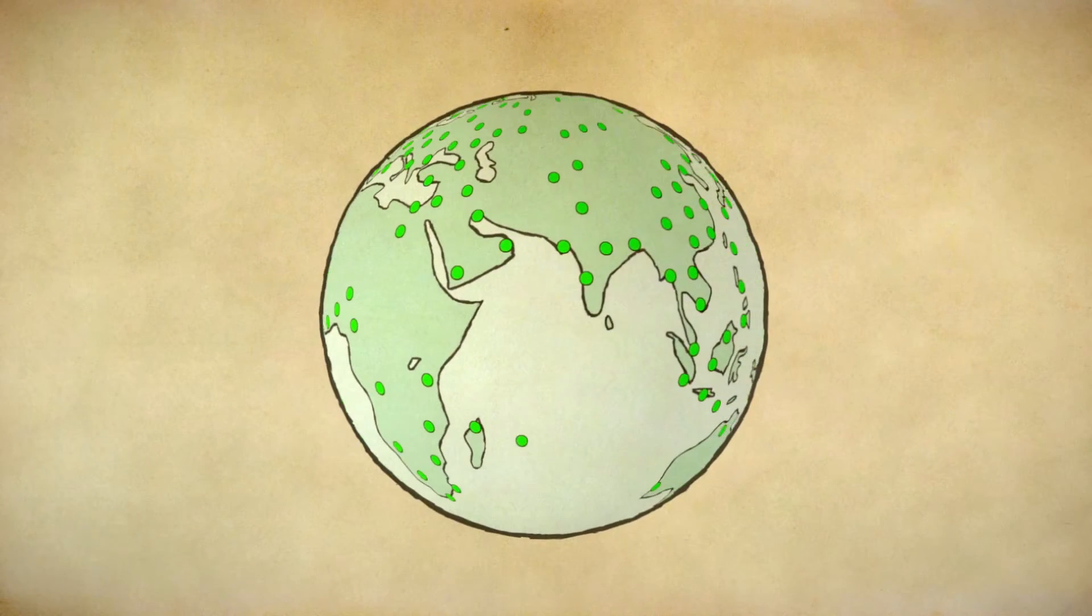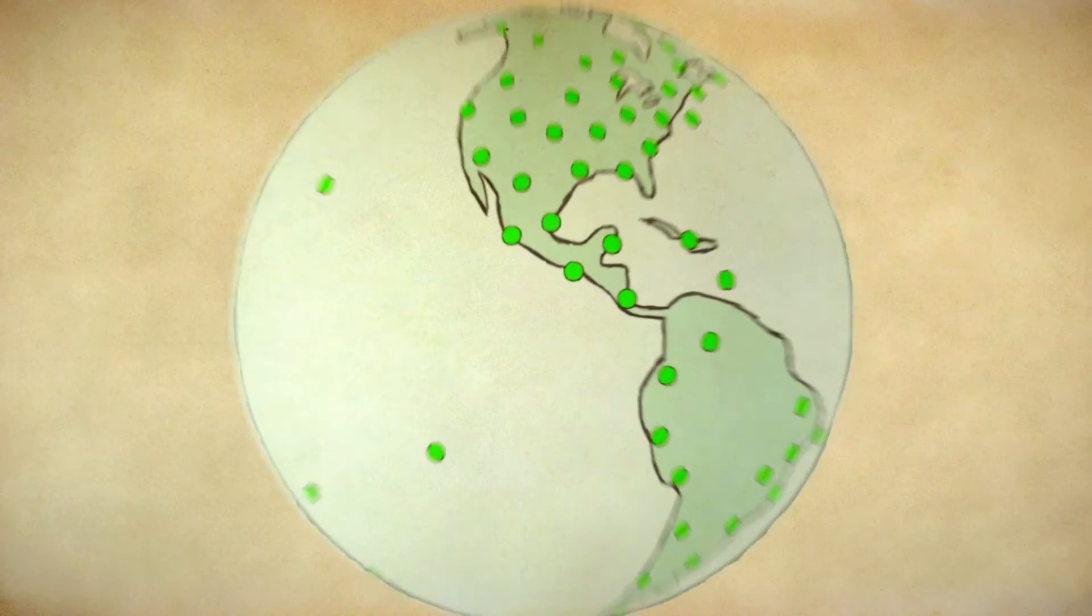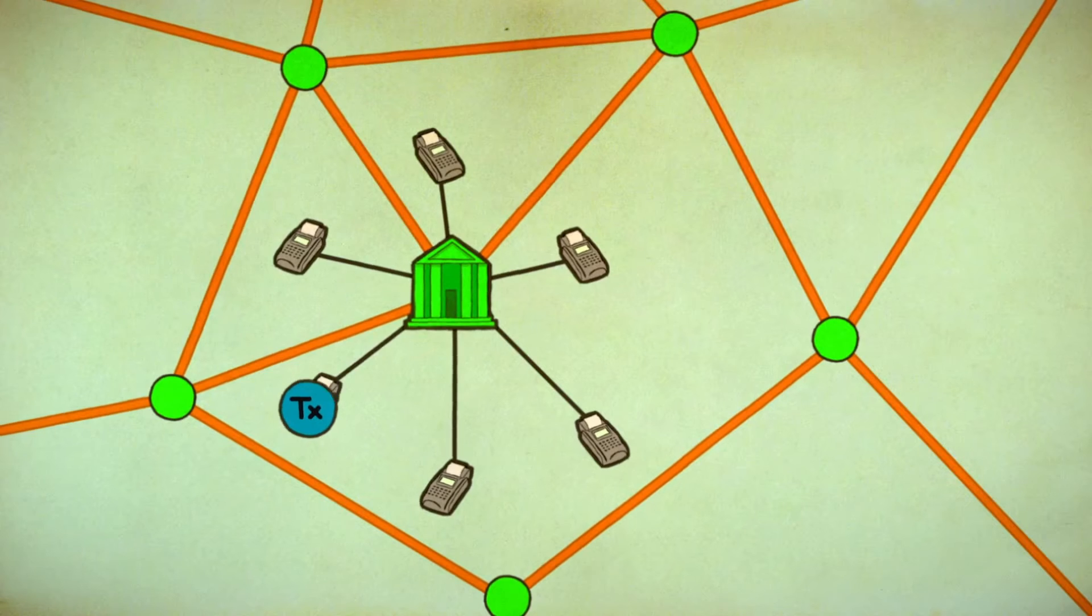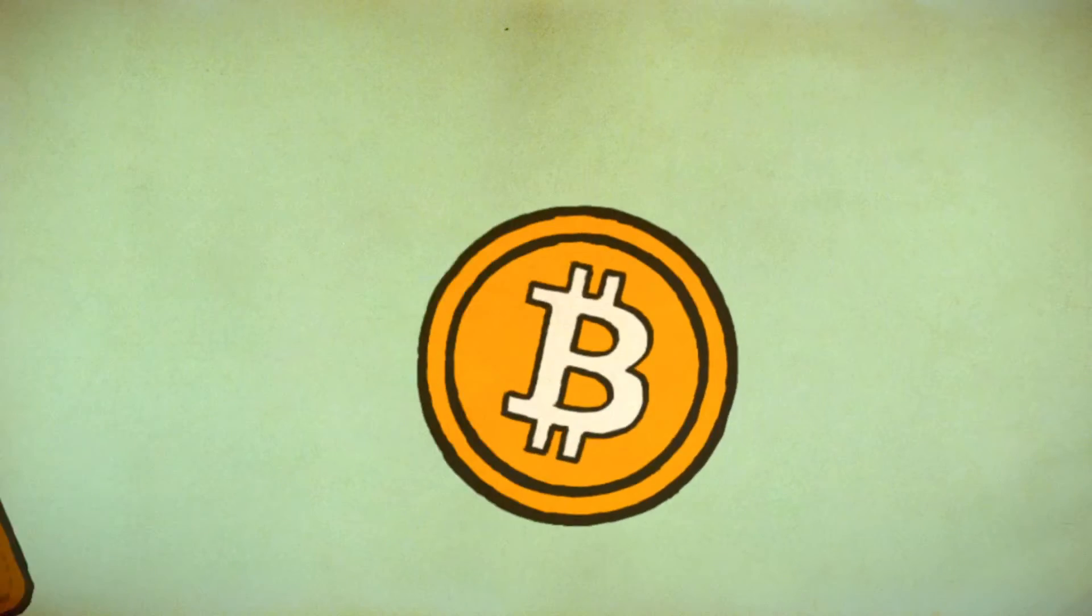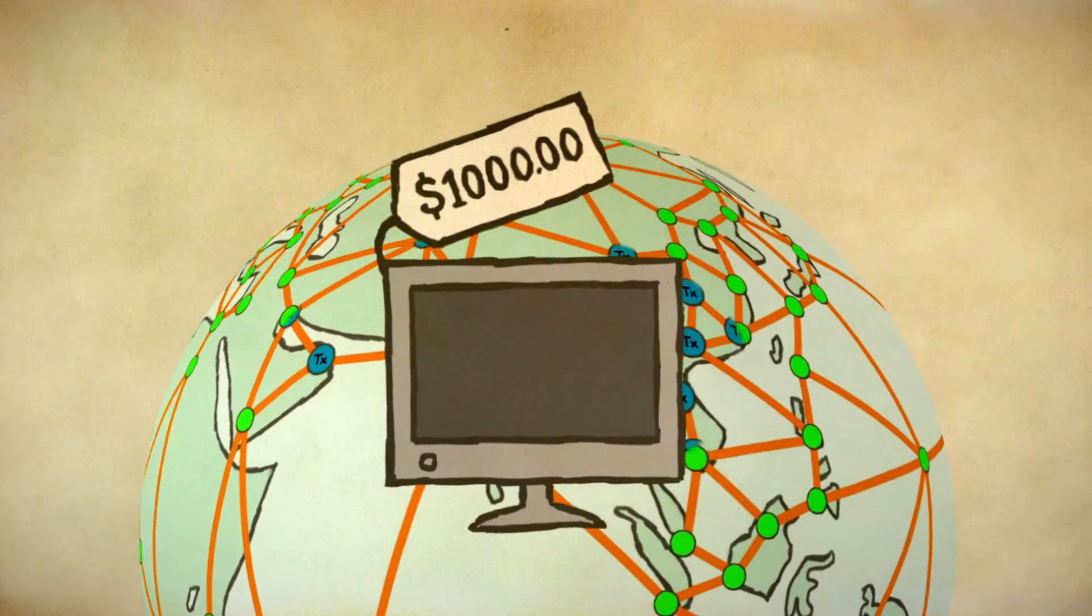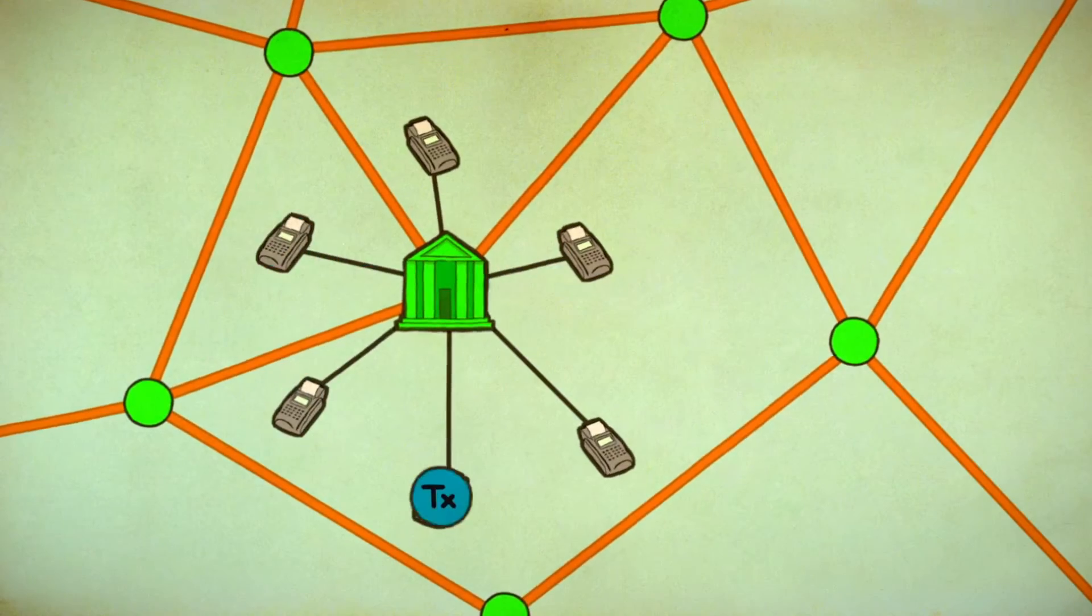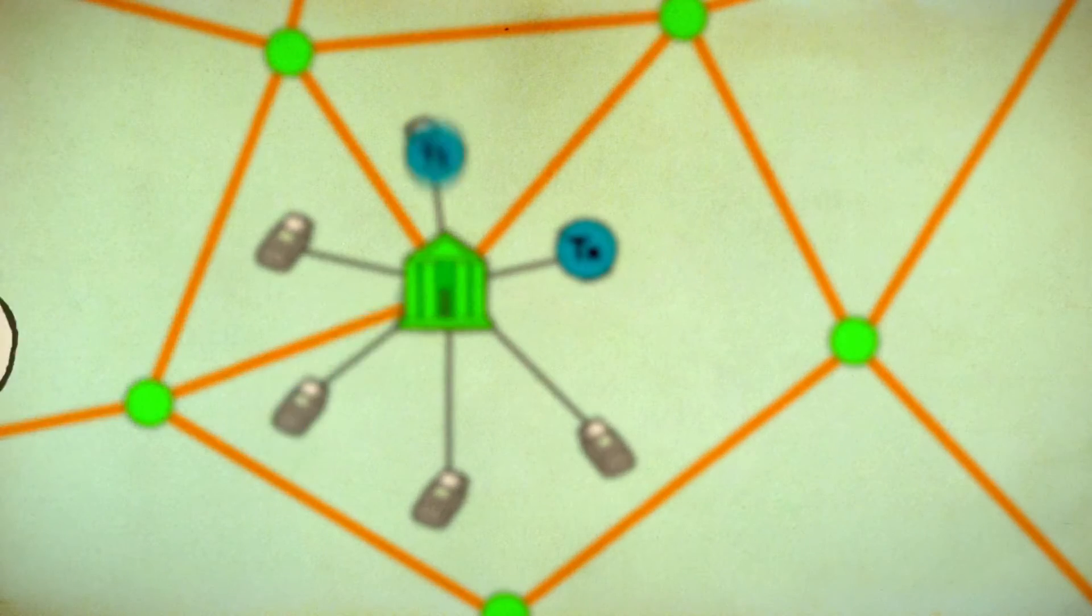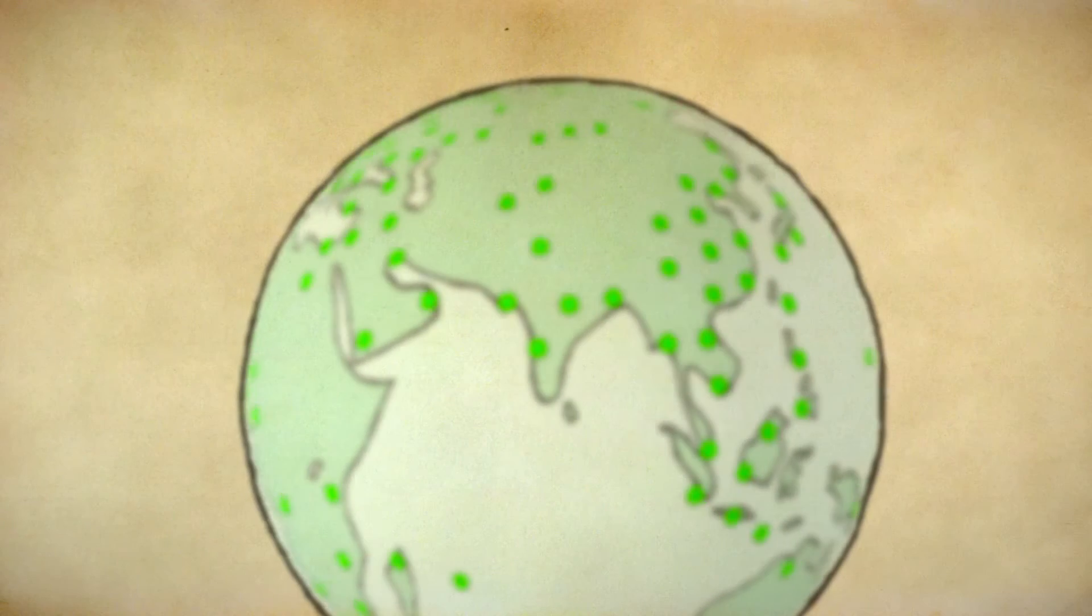We have an alternative to increasing the block size – off-chain transactions. The block size stays the same, and mining stays decentralized. You'll still use the blockchain for large transactions. Small exchanges will be handled by payment processors, which means small purchases like your morning coffee don't clog the whole system up.